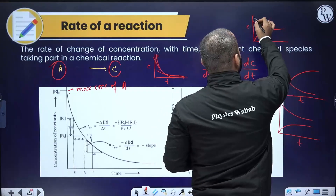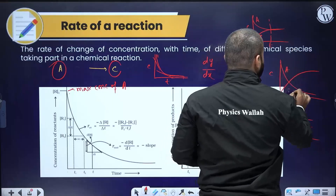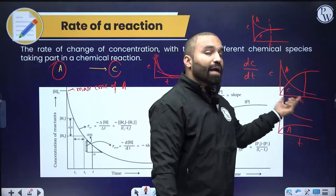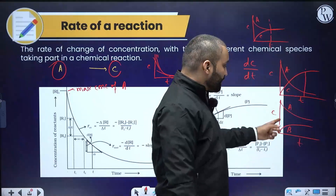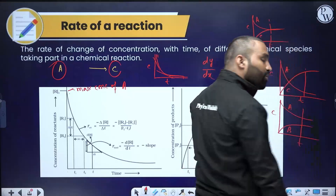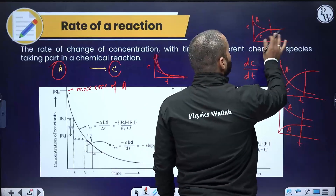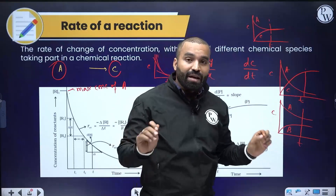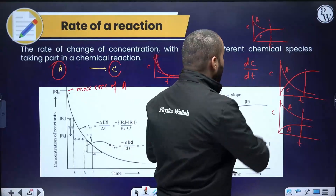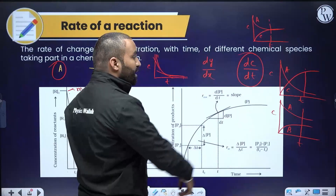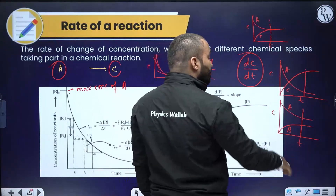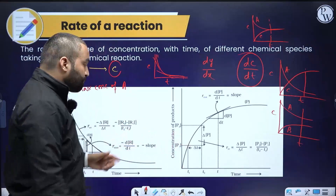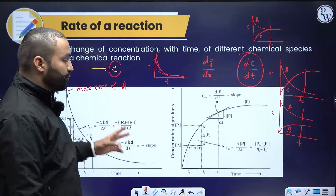After a certain time, concentrations of A and C stop changing — that time is called the equilibrium time. At equilibrium, the rate of the forward and backward reactions become equal. The concentration of A and C may or may not be equal at equilibrium, but the rates must be equal.